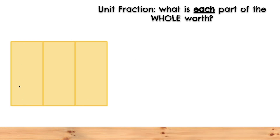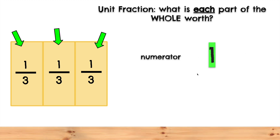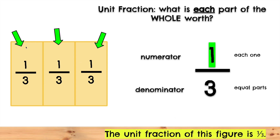Let's figure out the unit fraction for this figure. We need to figure out what each part is worth. We know we have 3 equal parts, so the denominator will have to be 3. The numerator will always be a 1 when we are looking for the unit fraction — 1 third. Each one is 1 third. So the unit fraction will have a numerator of 1 and a denominator of 3. The unit fraction of this figure is 1 third.